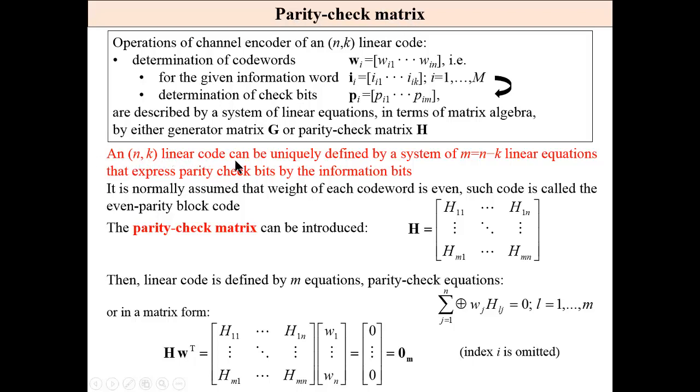An (n,k) linear code can be uniquely defined by the system of m linear equations that express parity check bits, m parity check bits, by the information bits. It is normally assumed that the weight of each codeword is even such that the code is called even parity check code.